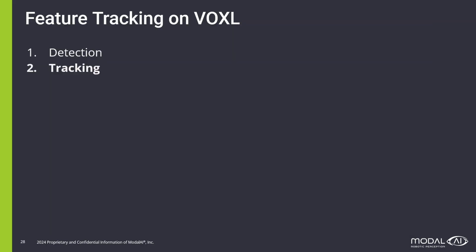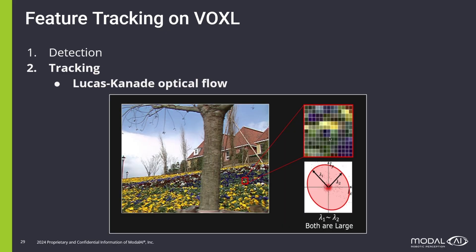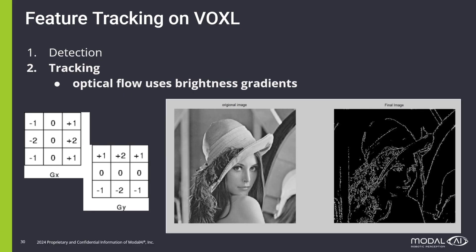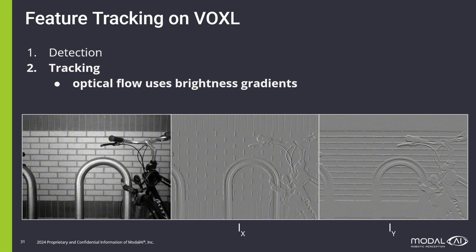The next step is tracking. Once we have identified features, we want to see how they move from frame to frame, and we do that using a technique called optical flow, which lets us know how pixels in one frame move to the next — by looking at how the brightness of pixels in the area around a feature change from frame A to frame B. We do this by calculating a brightness gradient, which measures changes in horizontal and vertical directions, and then use those changes along the X and Y axis to calculate how a point moves.